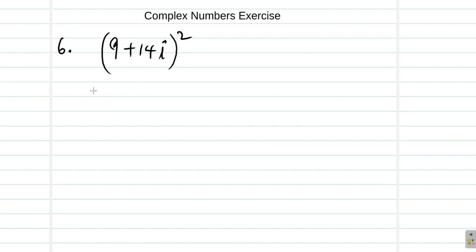All right, so here we have 9 plus 14i squared, which is 9 plus 14i multiplied by 9 plus 14i. All right.